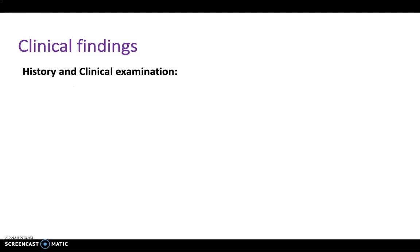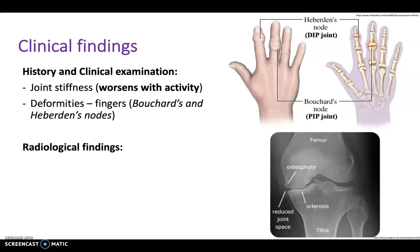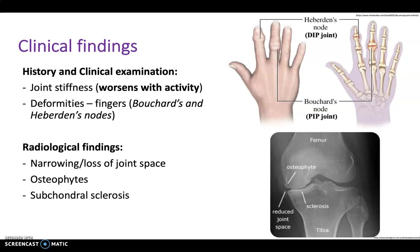Clinical findings of osteoarthritis include joint stiffness that worsens with activity. You can get deformities in the fingers — Bouchard's nodes at the proximal interphalangeal joints and Heberden's nodes at the distal interphalangeal joints. Radiological findings include four classical features: narrowing or loss of joint space, osteophytes, subchondral sclerosis, and bone cysts.